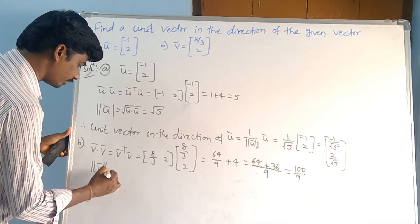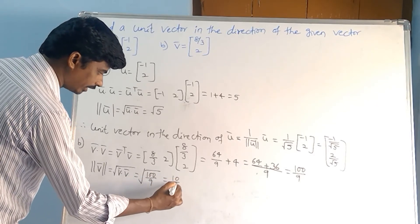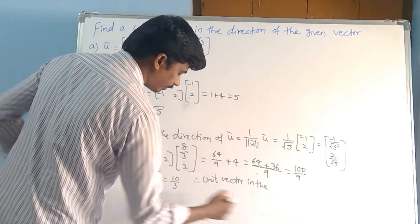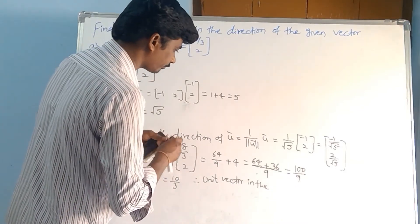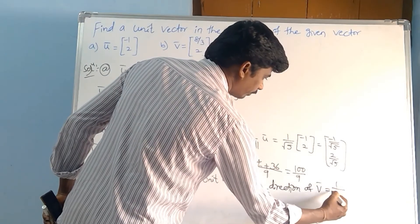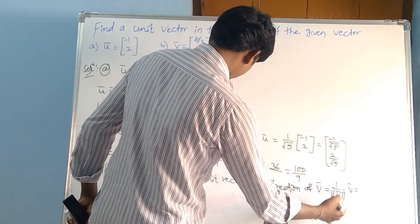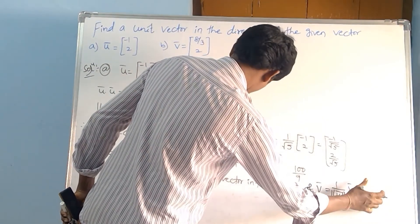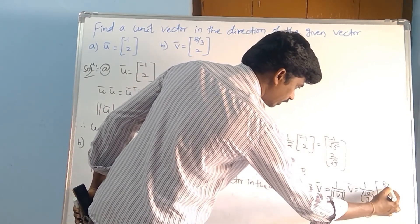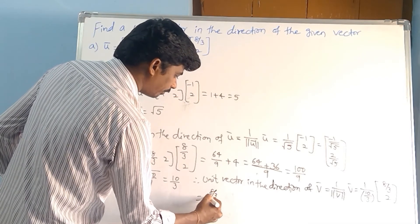Norm of v̅ equals the square root of v̅ dot v̅, that equals the square root of 100/9, which equals 10/3. Therefore, the unit vector in the direction of v̅ equals (1 / norm v̅) into v̅, that is (3/10) into (8/3, 2). For the first component: (8/3) divided by (10/3) equals (8/3) times (3/10). For the second component: 2 divided by (10/3) equals 2 times (3/10).